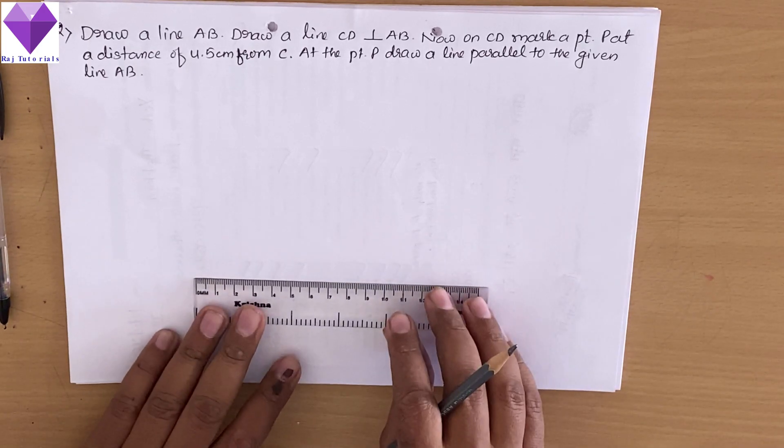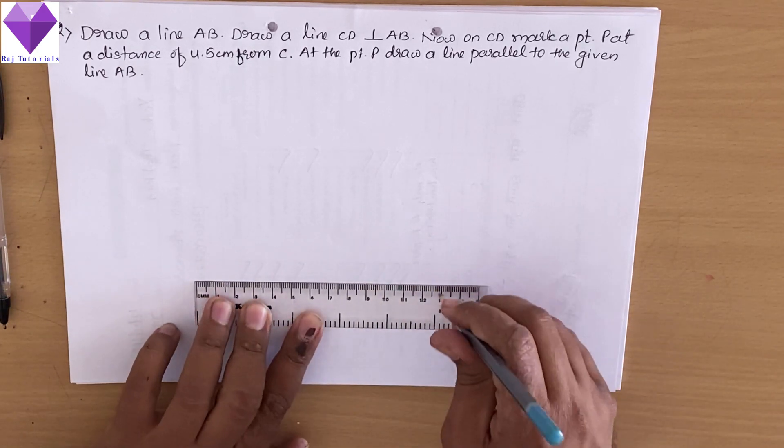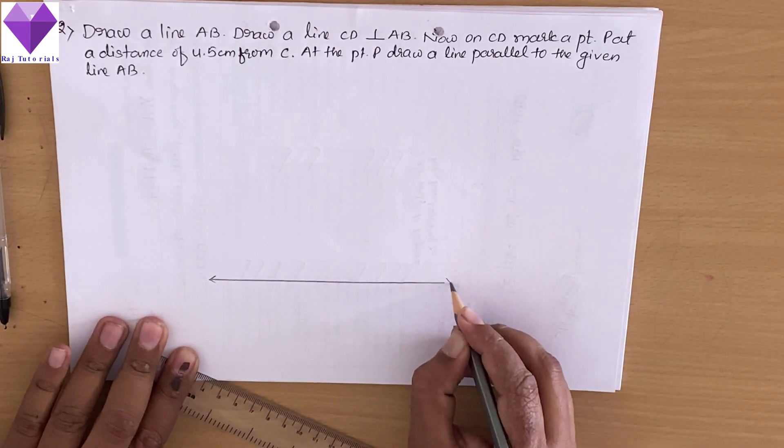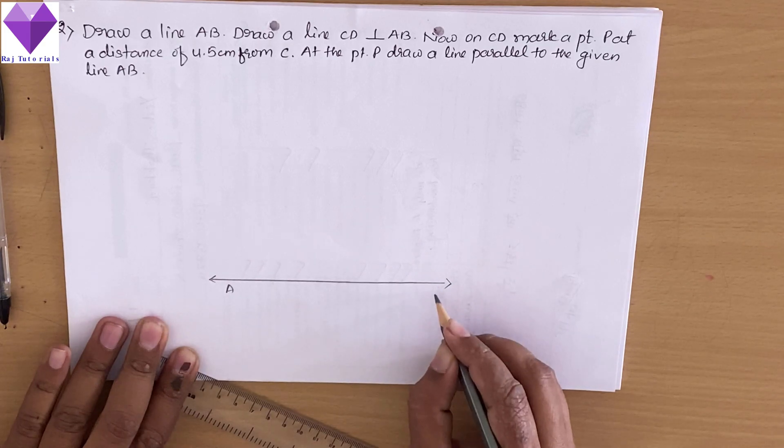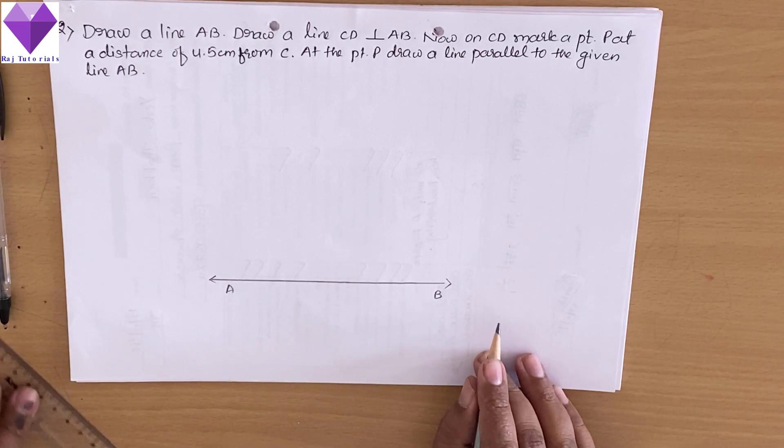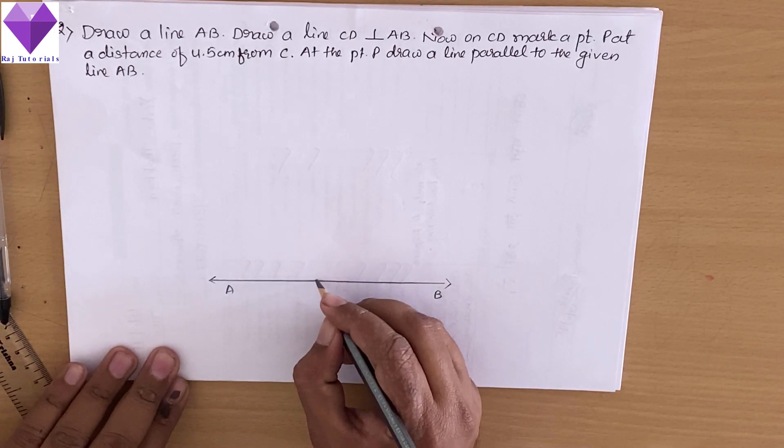So first of all, I am drawing a line AB. This is my line AB. Now on that, I am taking any one point.